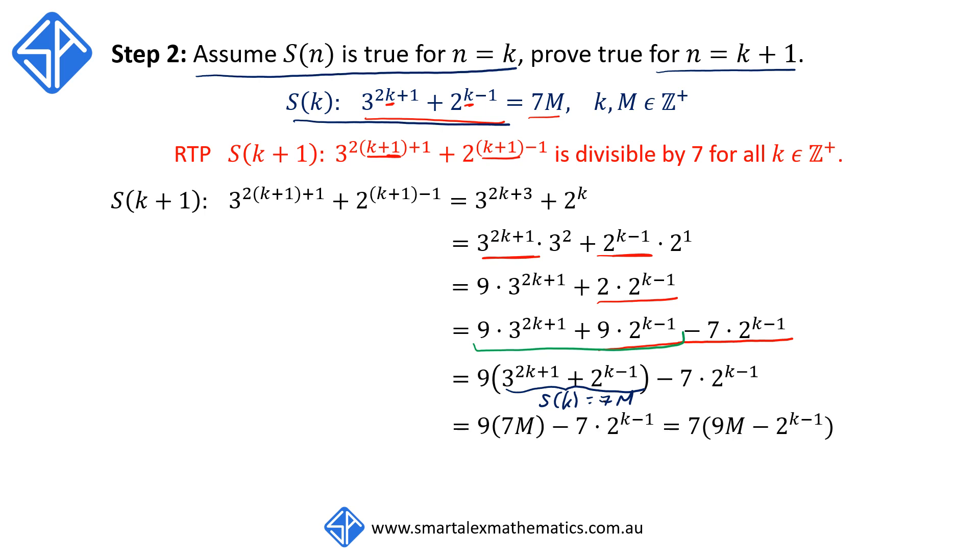So our next line becomes S(k plus 1) is now equal to 9 times 7M minus 7 times 2 to the k minus 1. And we now have a common factor 7, which we can factorize out to get 7 times 9M minus 2 to the k minus 1. So what we've just proven is that S(k plus 1) is also divisible by 7.